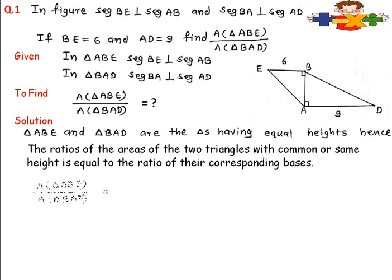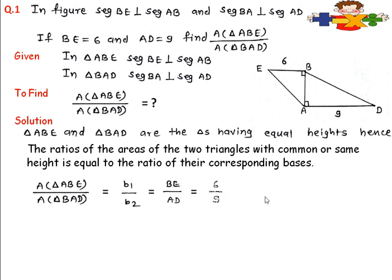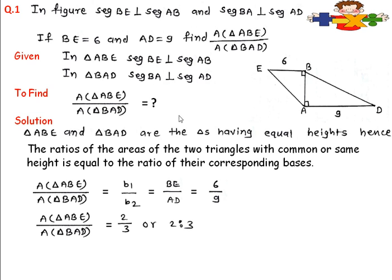So we write: area of triangle ABE upon area of triangle BAD equals B1 upon B2. The values cancel by 3, and we get 2 upon 3, or we can say 2 ratio 3. In this way we can find the ratio of the areas of two triangles when the height is the same.